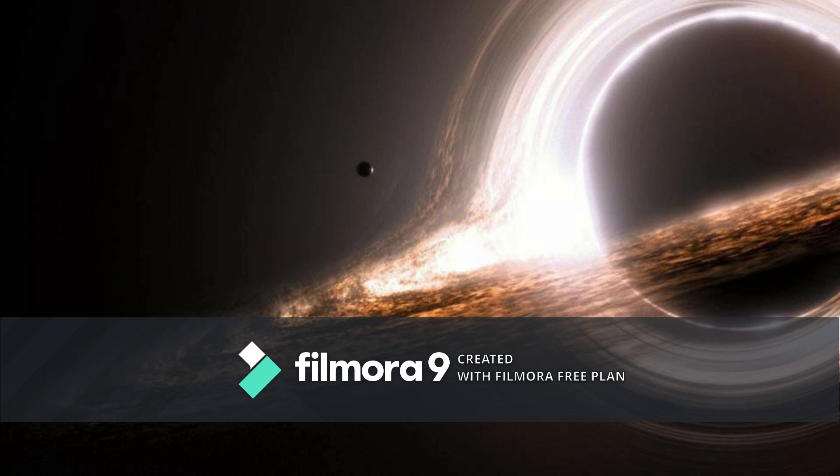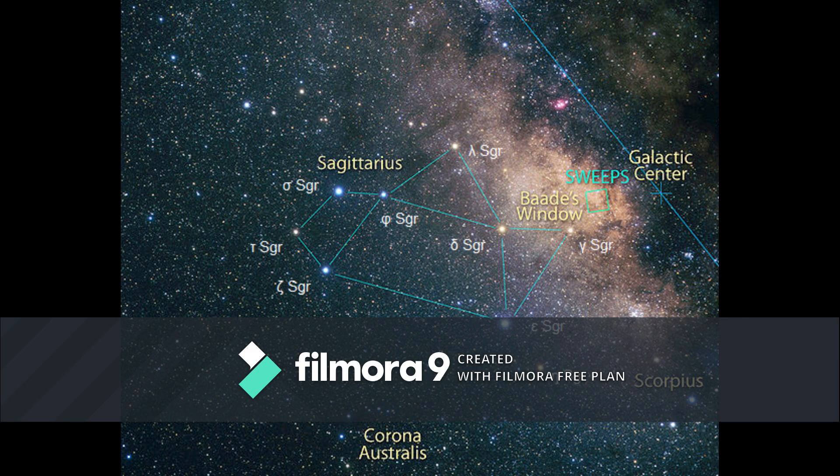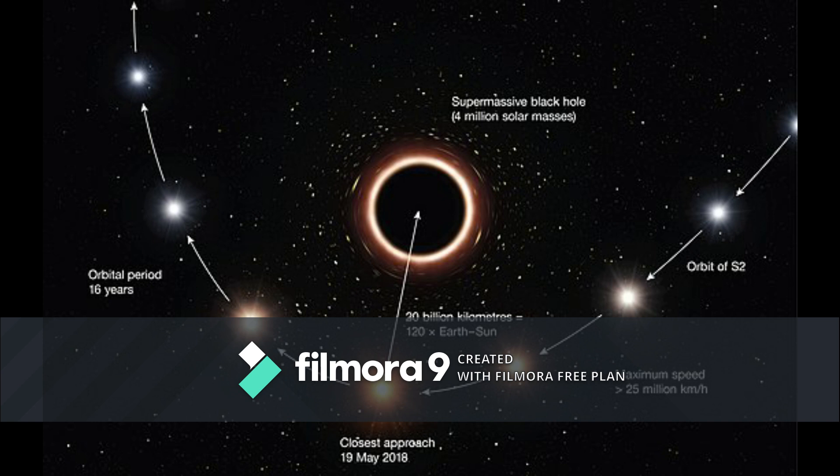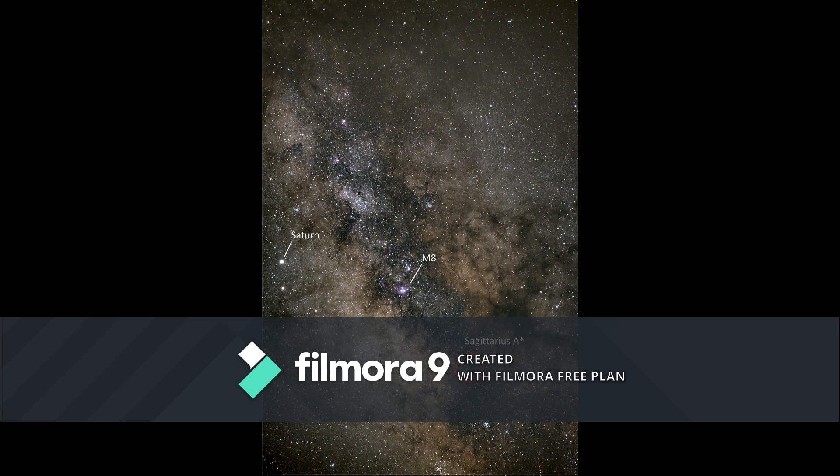There is an interesting object known as Sagittarius A. Sagittarius A is a supermassive black hole at the center of the Milky Way galaxy. Its mass is equal to 4 million suns. In the picture you can see the location of Sagittarius A.